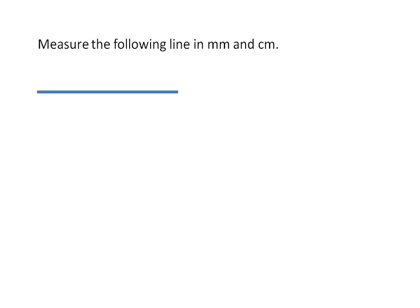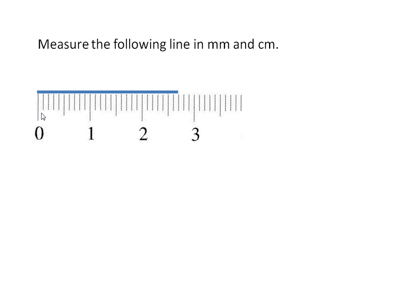Now try measuring a line. Arrange your ruler so that the zero mark is at one end of the line. First we will measure the line in millimetres: ten millimetres, twenty millimetres, twenty-five, twenty-six, twenty-seven millimetres. The line is twenty-seven millimetres long.